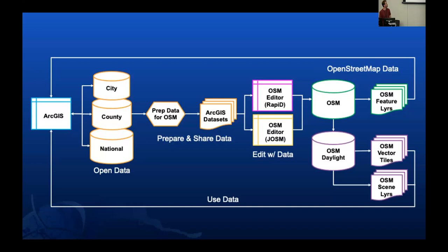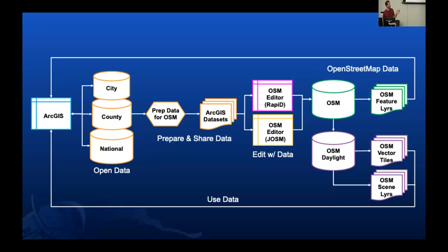I wanted to start with a little overview of what the OSM data pipeline looks like at Esri. We get that data from our city, county, and national government customers. We prepare that data for ingestion into OpenStreetMap — I'll get into the details in a bit. We publish those datasets as ArcGIS layers. From there, through the integration in Rapid, we can consume those layers directly in the editor. We actually have a very similar integration with JOSM as well. Obviously, those features make their way into OpenStreetMap and then into downstream products. We also create live hosted feature layers from OpenStreetMap, and we leverage Daylight downstream of OSM to create our vector tile base map and 3D scene layers.